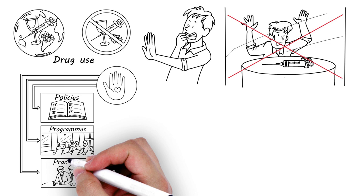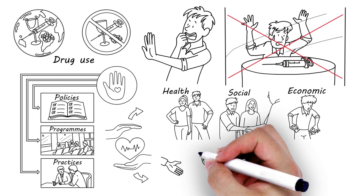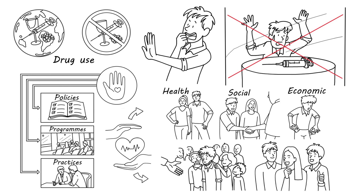Harm reduction consists of policies, programs, and practices that protect public health by reducing the adverse health, social, and economic consequences of drug use. It benefits people who use drugs, their families, and the wider community.